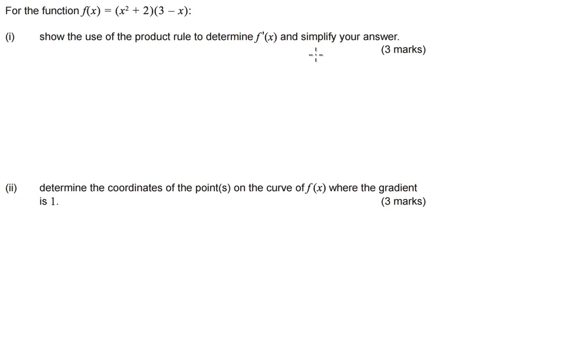Hey guys, I've had a request for this calculus exam question that says for the function f of x equals x squared plus 2 times 3 minus x, show the use of the product rule to determine f dash of x and simplify your answer.